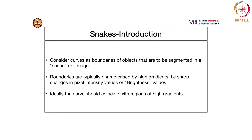What is the other characteristic of boundaries of objects? Typically in a medical imaging setting, the boundaries are characterized by high gradients — that is, sharp changes in pixel intensity values or brightness values. So ideally, the curve that we are propagating should also coincide with regions of high gradients.